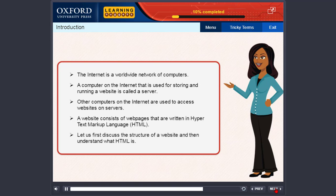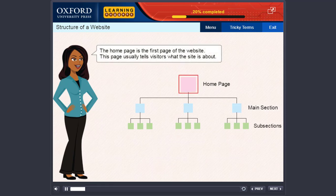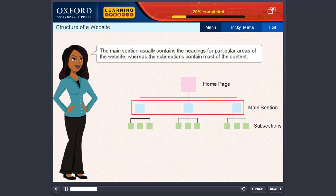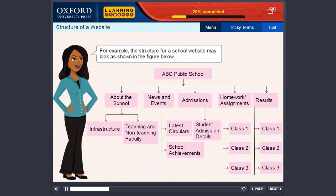Let us first discuss the structure of a website and then understand what HTML is. A website is composed of three main sections: the homepage, the main section, and subsections. The homepage is the first page of the website. This page usually tells visitors what the site is about. The main section usually contains the headings for particular areas of the website, whereas the subsections contain most of the content. For example, the structure for a school website may look as shown in the figure below.